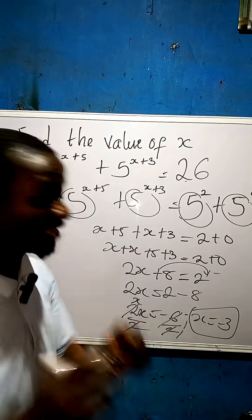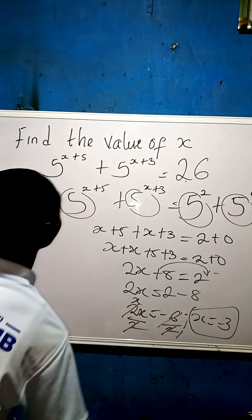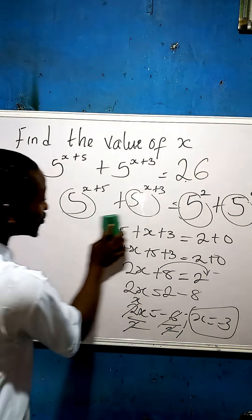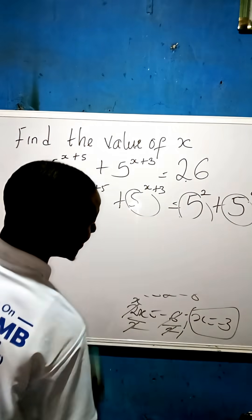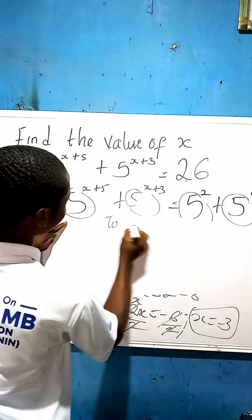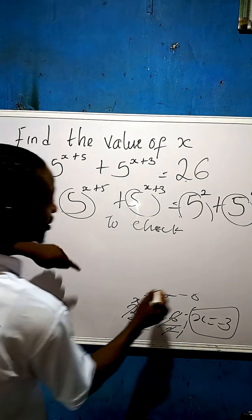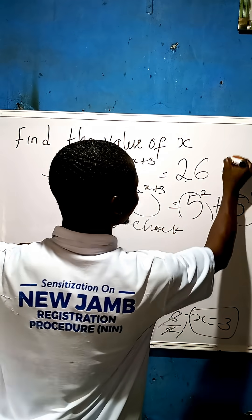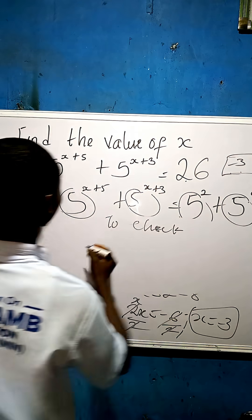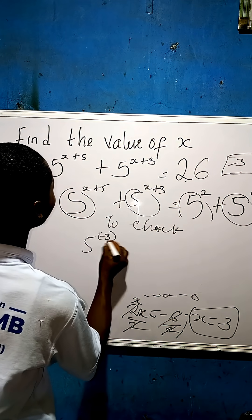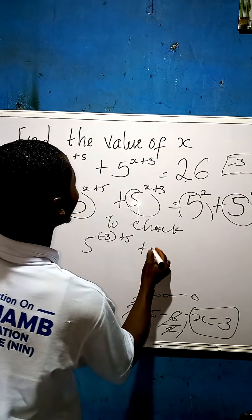Let us check whether we are correct. To check, since our x is minus 3, anywhere you see x is minus 3. Now we say 5 raised to the power of minus 3 plus 5, plus 5 to the power of minus 3 plus 3.